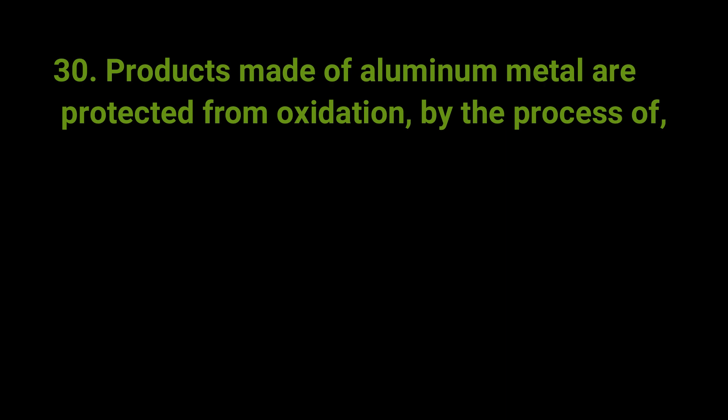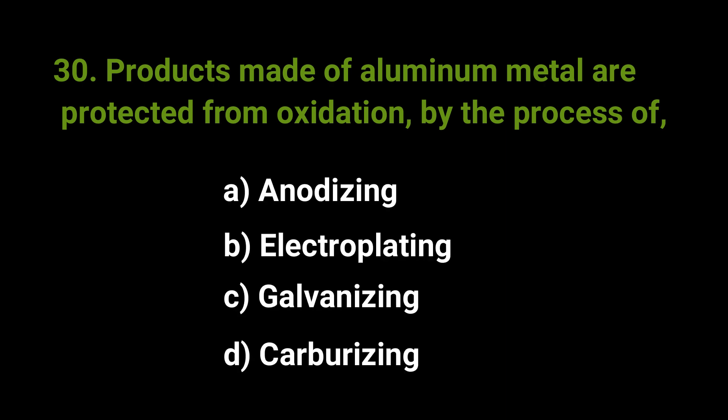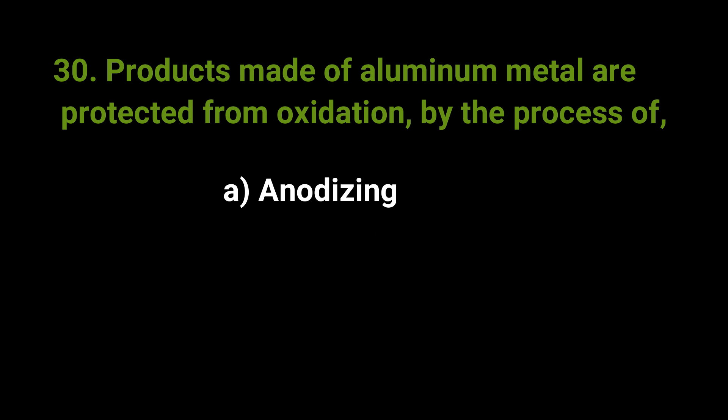Products made of aluminum metal are protected from oxidation by the process of. The answer is A. Anodizing.